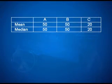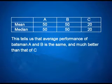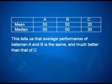The mean and median for this data are: for A, B, and C, the mean and median are 50, 50, 20 and 50, 50, 20 respectively. This tells us that the average performance of batsman A and B is the same and much better than that of C, but this is only part of the story.